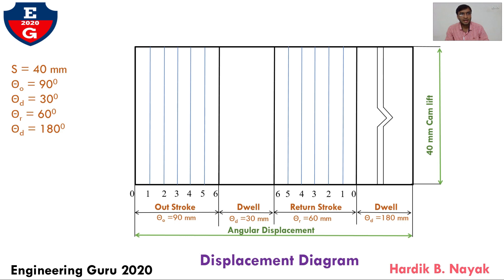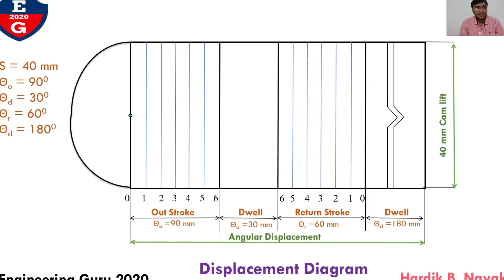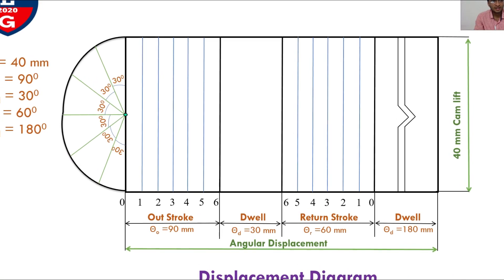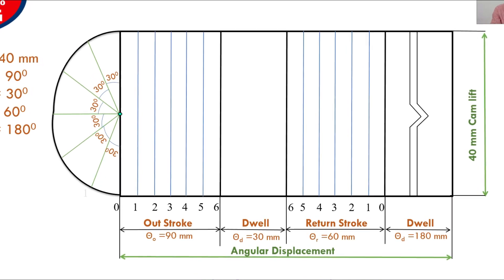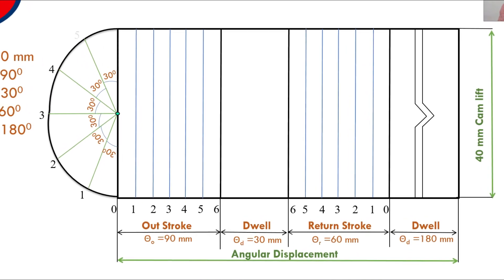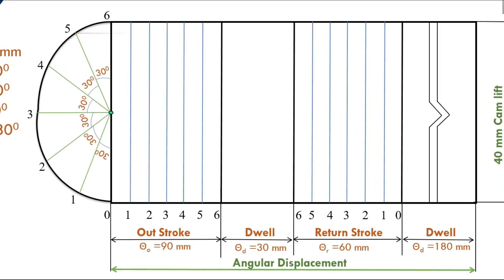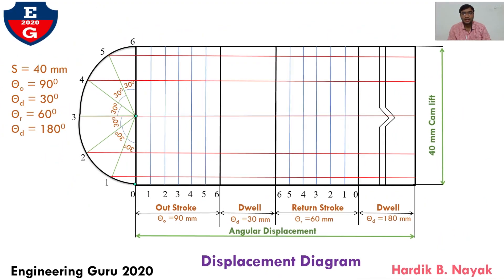Now we will draw the simple harmonic motion diagram. First, mark the midpoint at 20 mm and from here draw one semicircle. Then divide this semicircle into 6 equal parts with light lines, each at 30 degrees. Give notation from 0, 1, 2, 3, 4, 5 and 6, and draw light projected horizontal lines through all points.